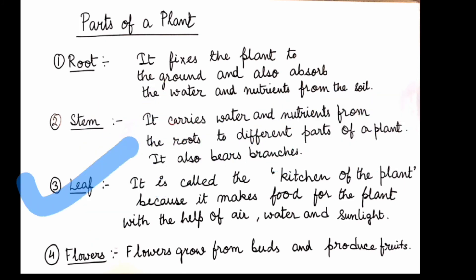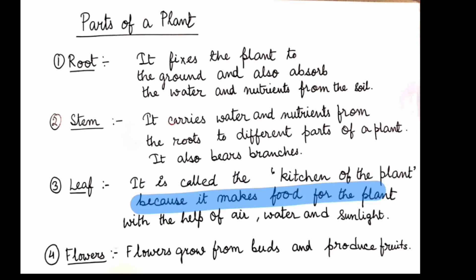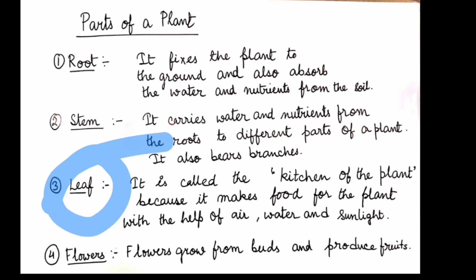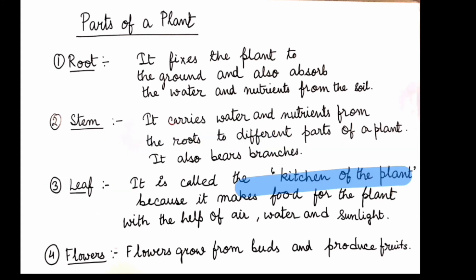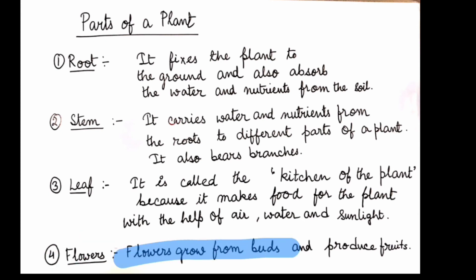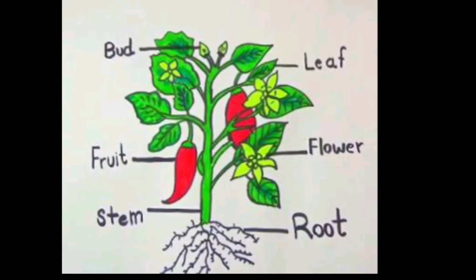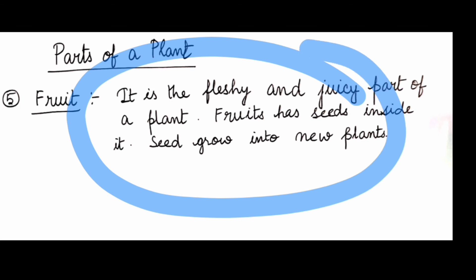The leaf is called the kitchen of the plant because it makes food for the plant with the help of air, water, and sunlight. Flowers are the most colorful parts of a plant. Flowers grow from buds and produce fruit — from the bud a flower grows and it produces fruit.